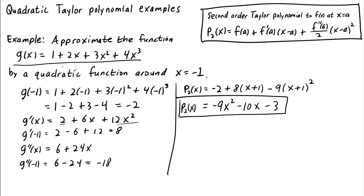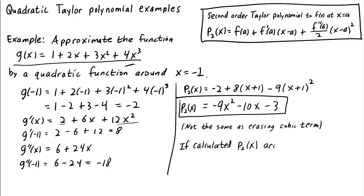If you compare g of x to p2 of x, you'll notice that the quadratic approximation is not the same thing as just erasing the cubic term. The reason we can't just erase the cubic term to get a quadratic approximation is that the term 4x cubed does change the curvature of g, and so we have to take it into account. The function g of x has many different quadratic approximations, depending on the point at which you calculate the quadratic approximation.